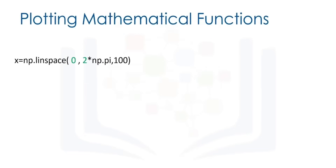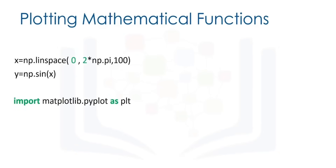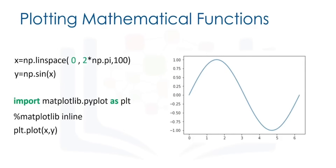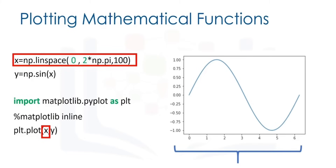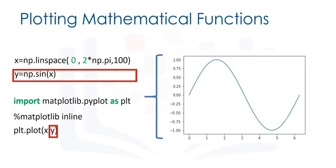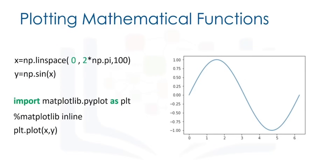We can use linspace to generate 100 evenly spaced samples from the interval 0 to 2π, then use the NumPy sine function to map the array x to a new array y. We can import the library pyplot as plt to help us plot the function. Using a Jupyter notebook, we use the command matplotlib inline to display the plot. The plot function takes the x-axis values as the first input and the y-axis values as the second.